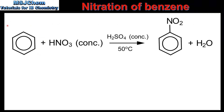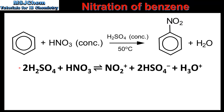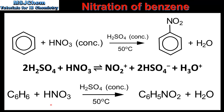To summarize: the nitration of benzene involves the reaction of benzene with concentrated nitric acid and concentrated sulfuric acid. The mixture of these two concentrated acids is known as a nitrating mixture. The electrophile in the reaction is the nitronium ion. The concentrated sulfuric acid acts as the catalyst, and the reaction is carried out at 50°C. The products of the reaction are nitrobenzene and water.